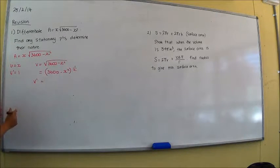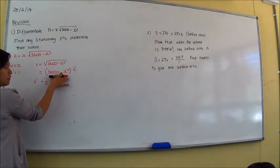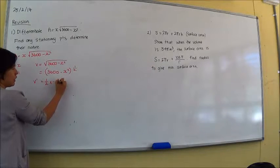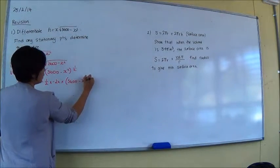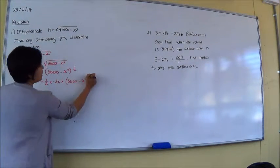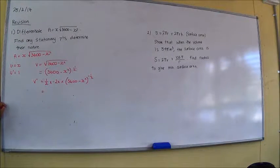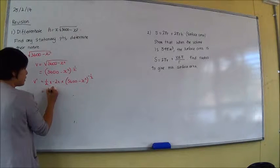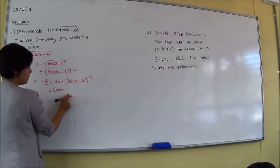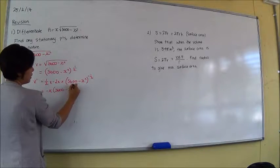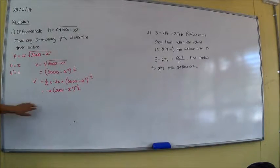So now what we're going to do is derive it. So v dash is going to be a half times negative 2x is negative x, brackets, 3,600 minus x squared to the negative a half. So I'm going to leave it as is now.